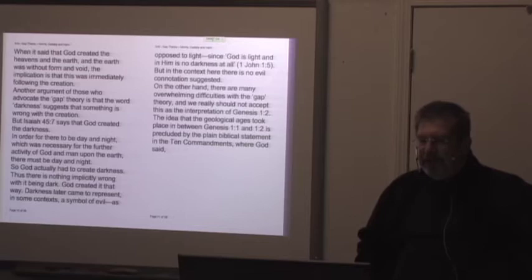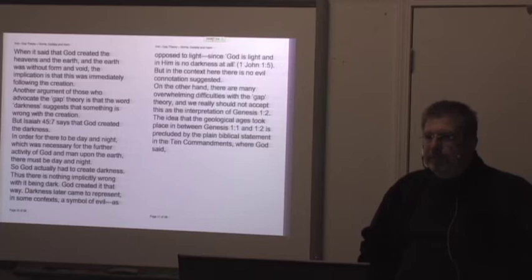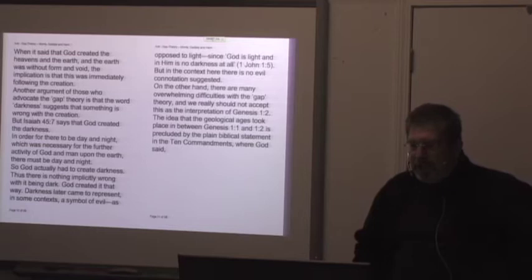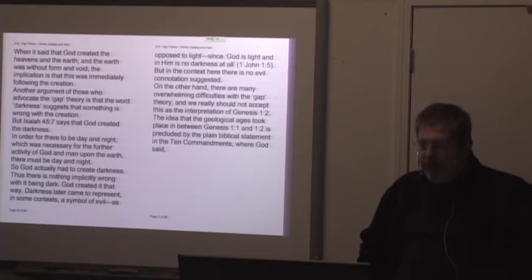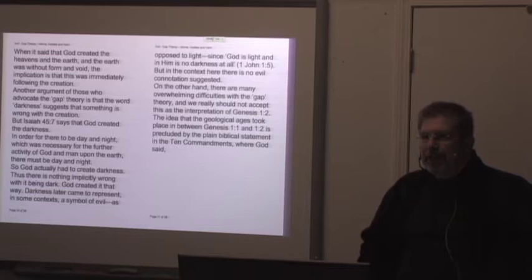There are many, many places where and starts a verse that is not immediately sequential to the verse preceding it. Another argument of those who advocate the gap theory is that the word darkness suggests that something is wrong with the creation. But Isaiah 45:7 says that God created the darkness. In order for there to be day and night, which was necessary for the further activity of God and man upon the earth, there must be day and night. So does that say that darkness, there isn't sometimes something wrong with darkness? So God actually had to create darkness. Thus there's nothing implicitly wrong with it being dark. God created it that way. Darkness later came to represent, in some contexts, a symbol of evil, as opposed to light. But in the context here, there is no evil connotation suggested. Unless you believe in the gap theory.